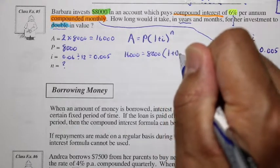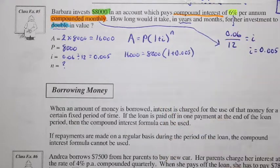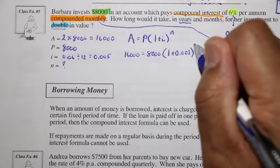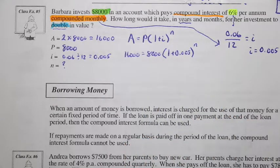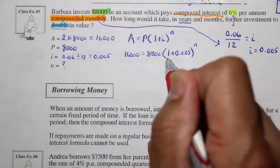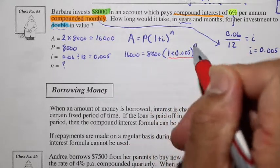1 plus 0.005 to the exponent n, which we don't know yet. All right, to solve this, we're going to notice that we're going to isolate this part so we can get to our n.